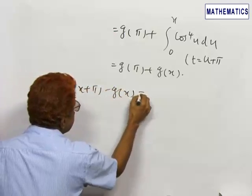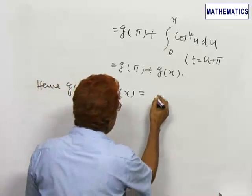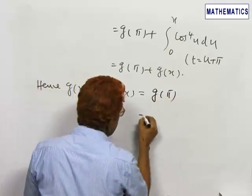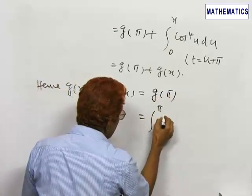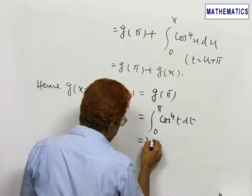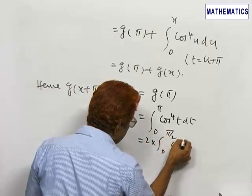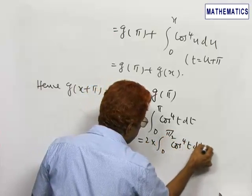Hence g(x + π) - g(x) equals g(π), which is the integral from 0 to π of cos⁴ t dt. By a property of definite integrals, this is twice the integral from 0 to π/2 of cos⁴ t dt.